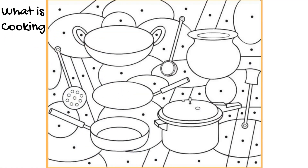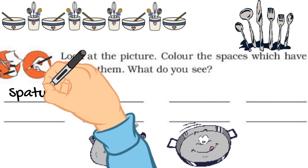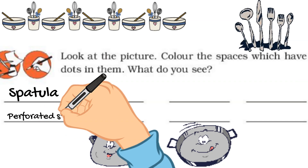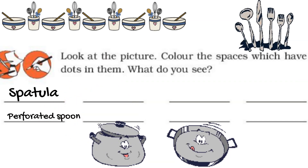Which utensils can you see in this picture? After coloring the background, you can see a spatula — you can turn the rotis using a spatula. You can also see perforated spoons. These spoons are used to fry something; if we fry some chips, we can remove the chips from the pan using these spoons.